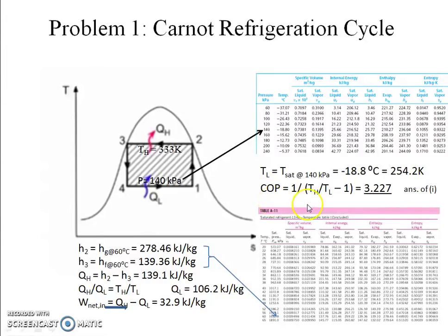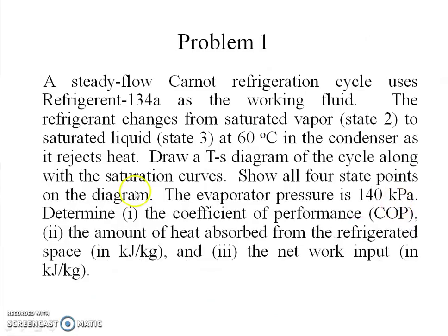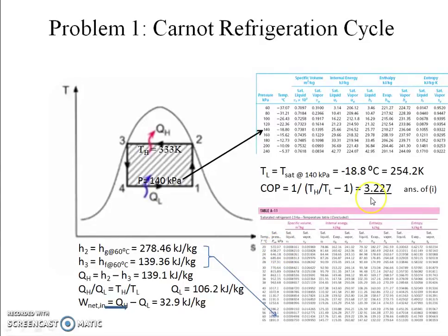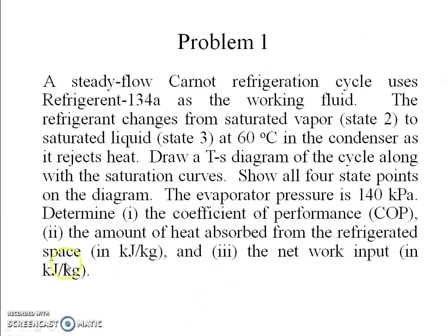To calculate the coefficient of performance, we use COP = 1 / (T_H / T_L − 1). Substituting the high-temperature reservoir temperature and the low-temperature reservoir temperature, we get COP = 3.227.